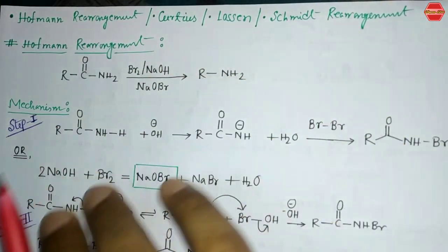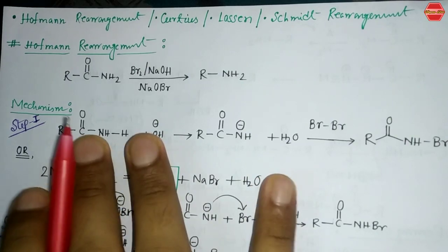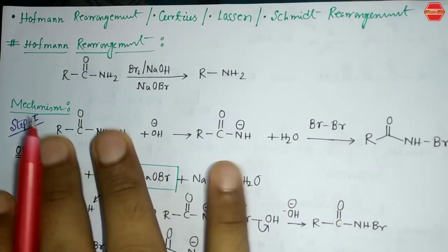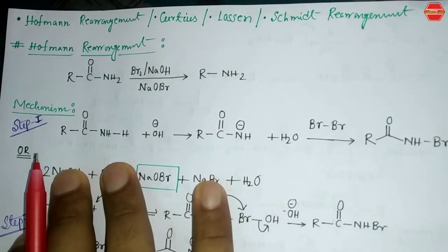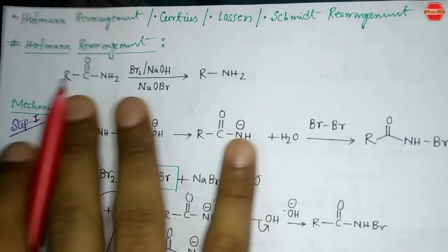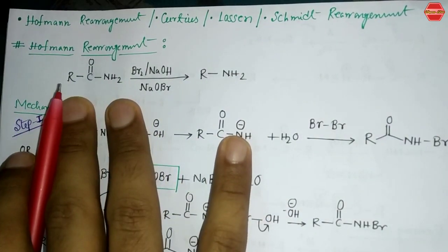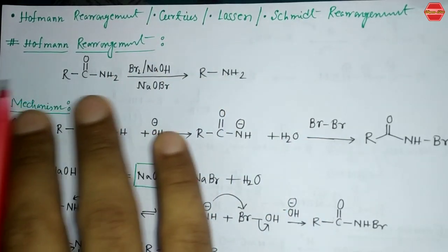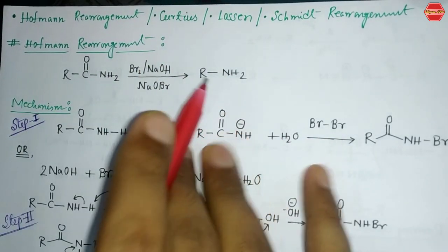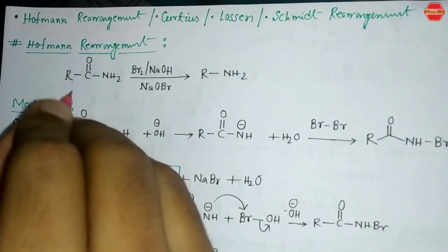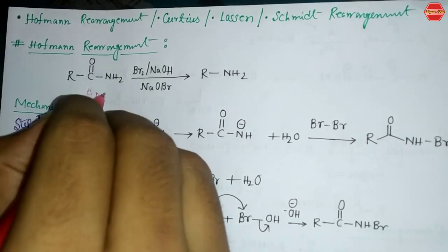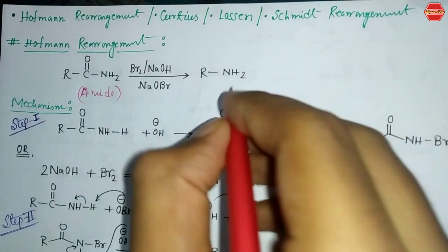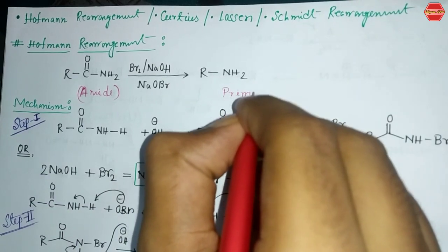Let's look at the first rearrangement reaction: the Hofmann rearrangement. The main compound used for this reaction is an amide. The main purpose of this rearrangement reaction is to convert an amide to a primary amine.